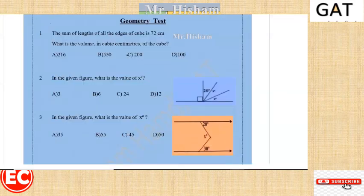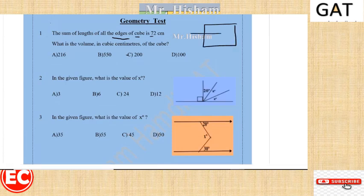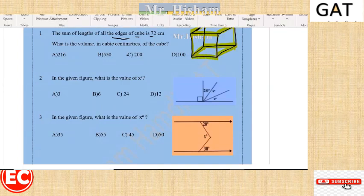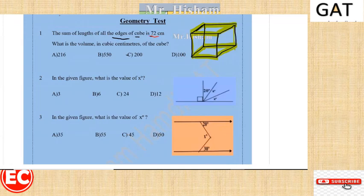Welcome to another geometry test. Question one: the sum of the lengths of all the edges of a cube is 72. As we know, the cube consists of six faces and each face is a square. Counting the number of edges, we figure out there are twelve edges in the cube. So by dividing 72 by 12, each edge is equal to 6.